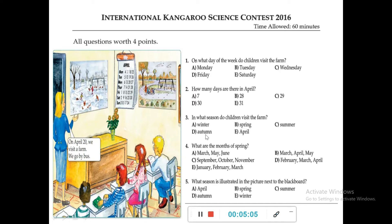Question 4: What are the months of spring? One month you already know is April. Looking at the options: March, April, May — June is very hot so it is not a spring month. September, October, November — November is a winter month. February, March, April — February and January are winter months. So March and April are both months of spring. B is correct.